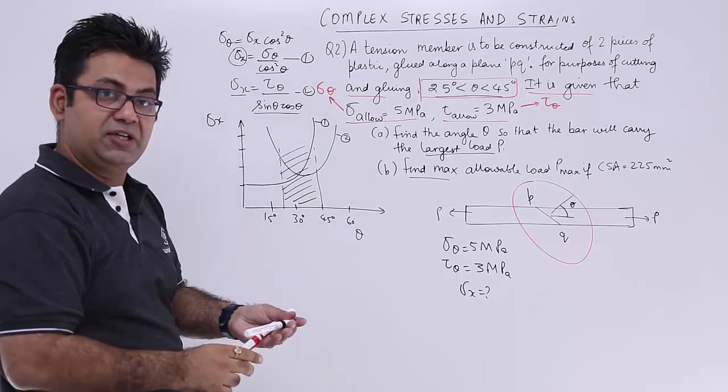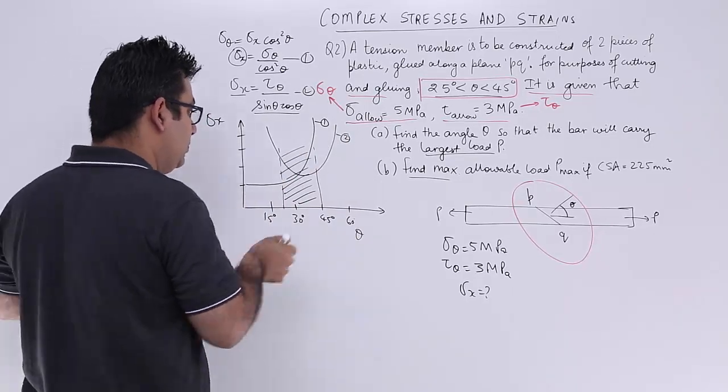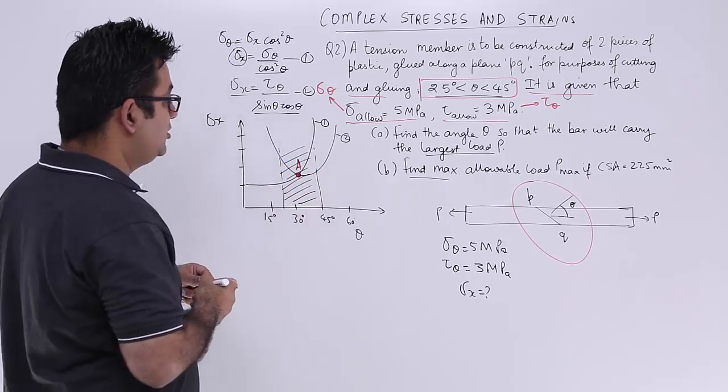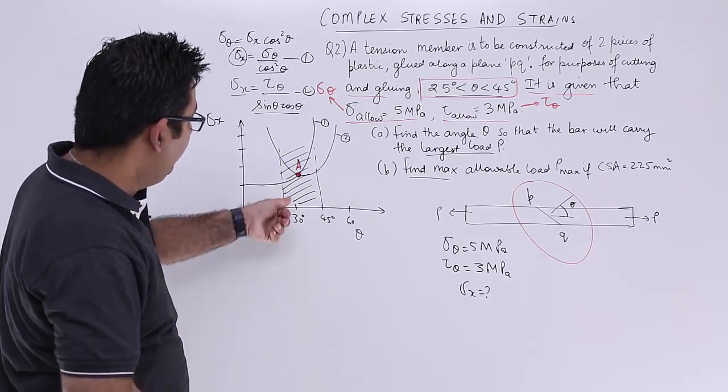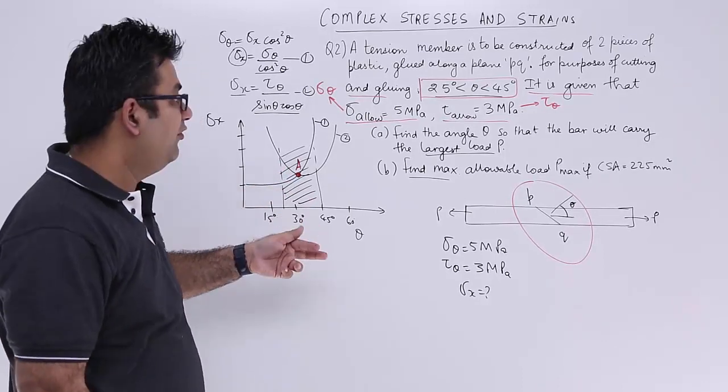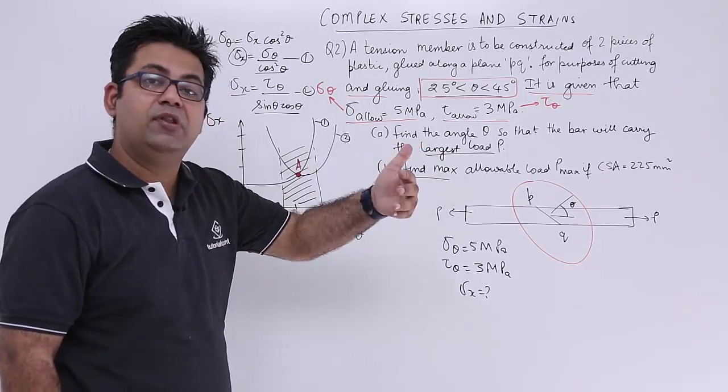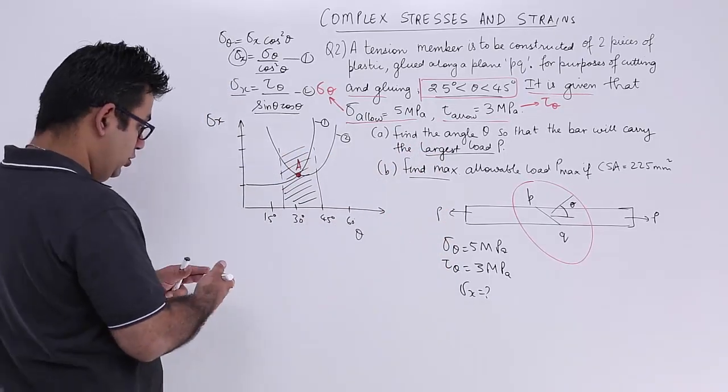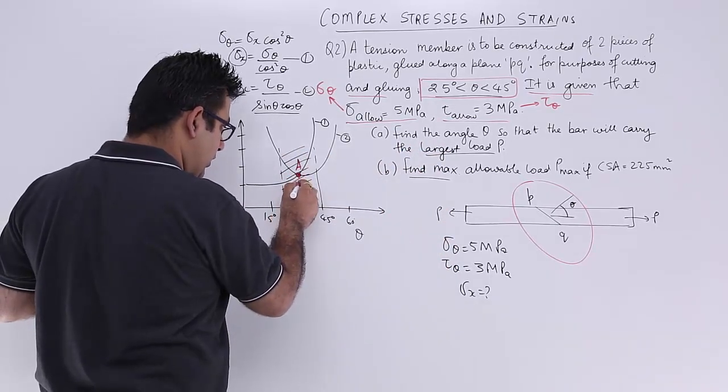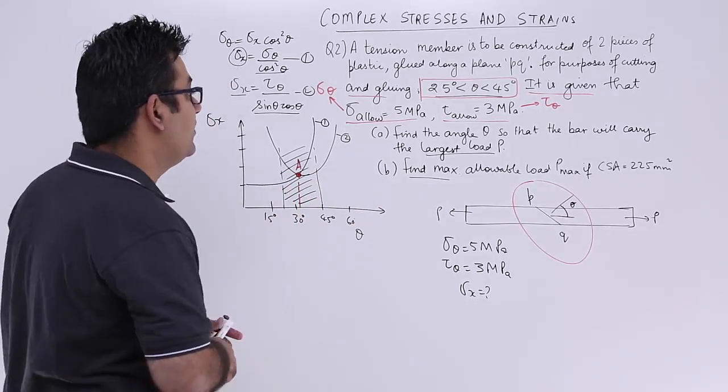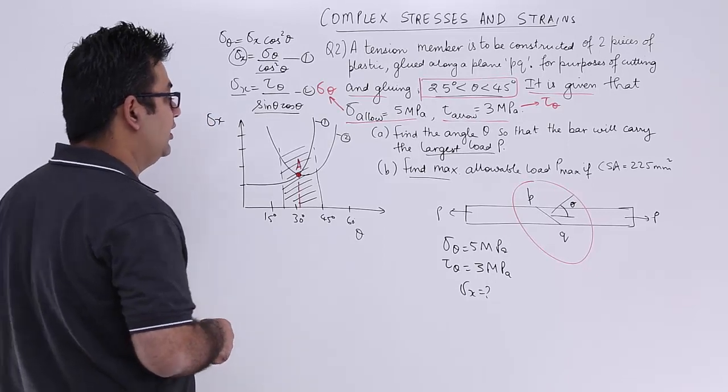So this is equation 2. Where these two equations are meeting, at point A, this point will give you the maximum value of theta and the maximum value of sigma x. Somewhere about here you will have your theta against which sigma x would be maximum.